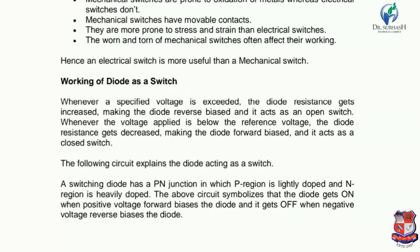Now let us discuss the working of a diode as a switch — how we can use a diode as a switch. Whenever a specific voltage is exceeded, the diode resistance increases, making the diode reverse biased, and it acts as an open switch. Whenever the voltage applied is below the reference voltage, the diode resistance decreases, placing the diode in forward bias, and it acts as a closed switch.